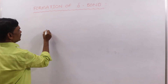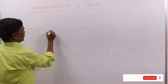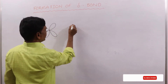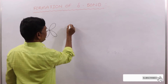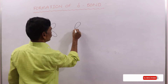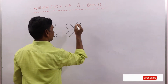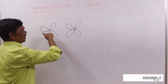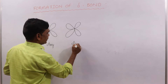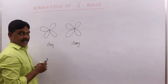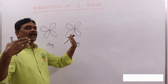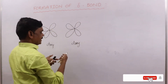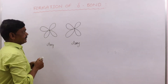Here I am taking the dxy orbital. So another dxy orbital I am taking as well. What is delta bond? If all four lobes of this dxy orbital and this also dxy orbital — all four lobes of d orbital can overlap each other — that is known as delta bond.